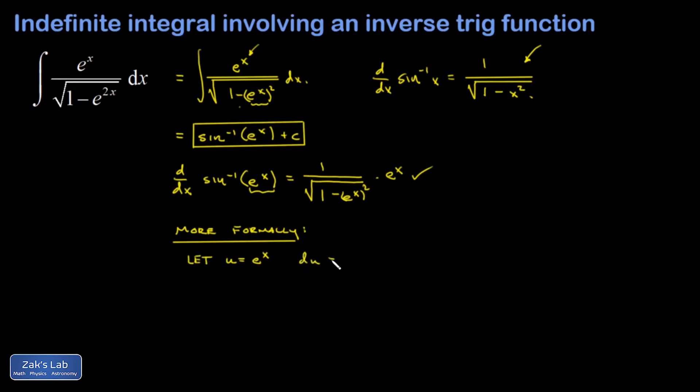Then du is e to the x dx which I happen to see right here in the numerator. So that's going to be du. And my integral becomes 1 over square root 1 minus u squared du. And that's the base formula for the derivative of the inverse sine function. So my anti-derivative is the inverse sine of u plus c.